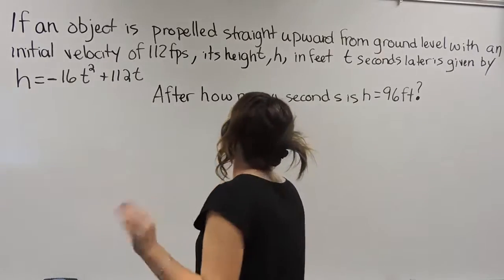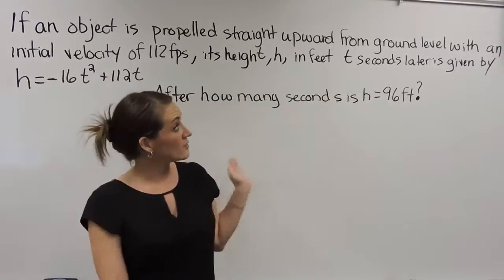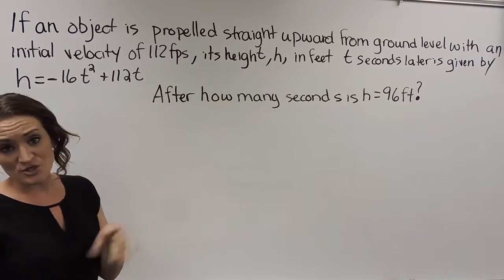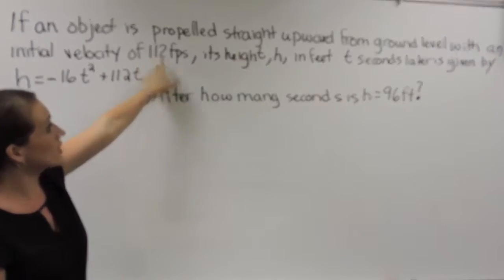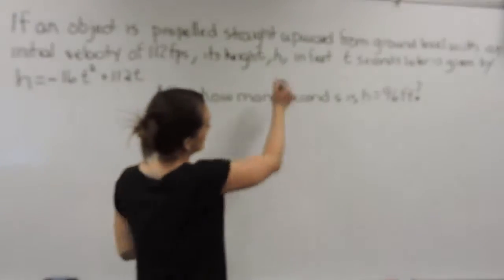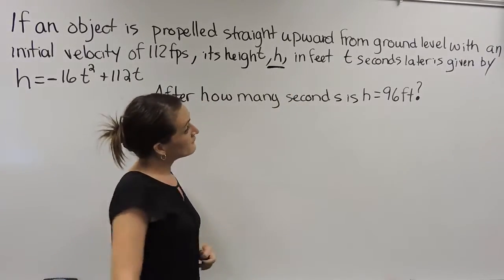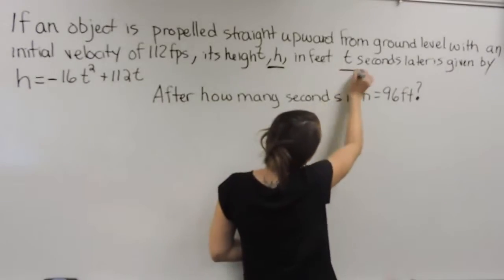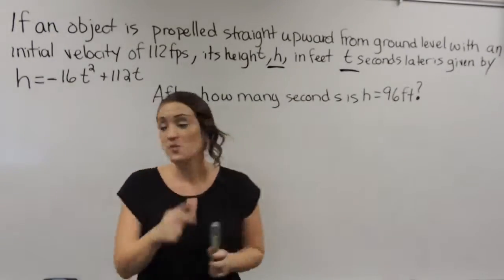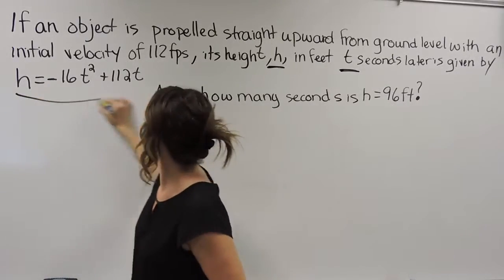So this problem says if an object is propelled straight upward from ground level with an initial velocity of 112 feet per second, its height represented by the letter h in feet after t seconds later is given by the following equation. So here they gave us this equation.